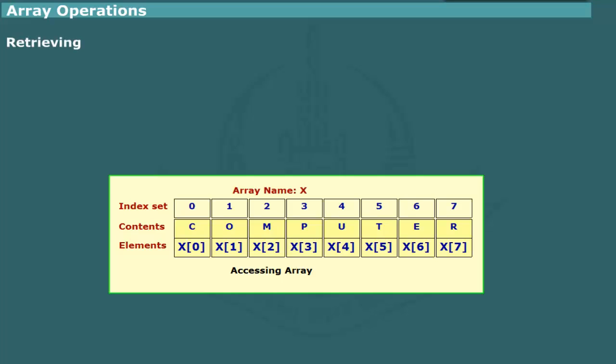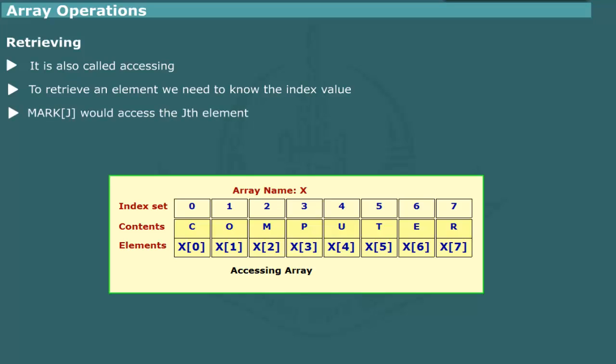Retrieving an element is the most common operation. It is also called accessing. To retrieve an element, we need to know the index value. For example, mark j would access the jth element of array mark. As noted before, the computer can directly retrieve an element without examining other elements in array. Thus, accessing operation is very fast. Further, since the access is independent of the number of elements in the array, access operation has a time efficiency O(1).